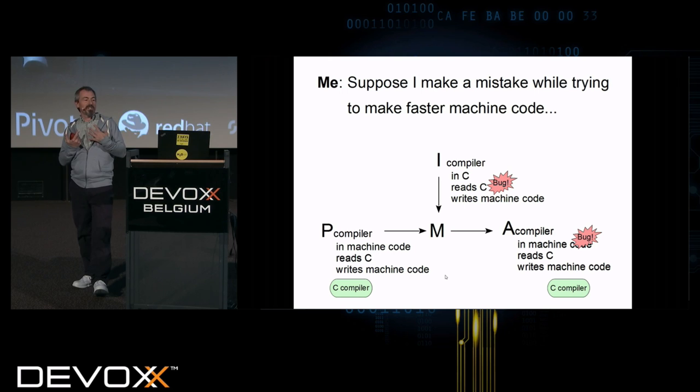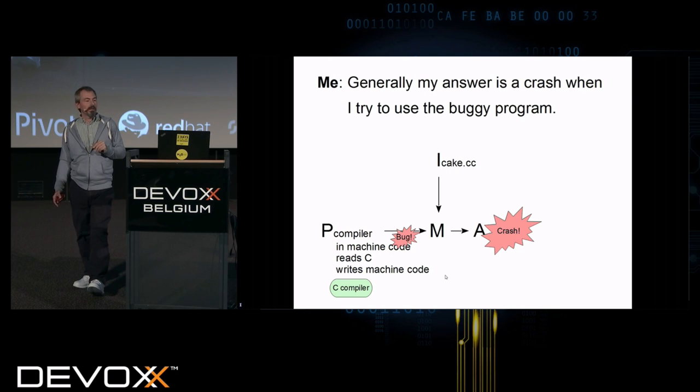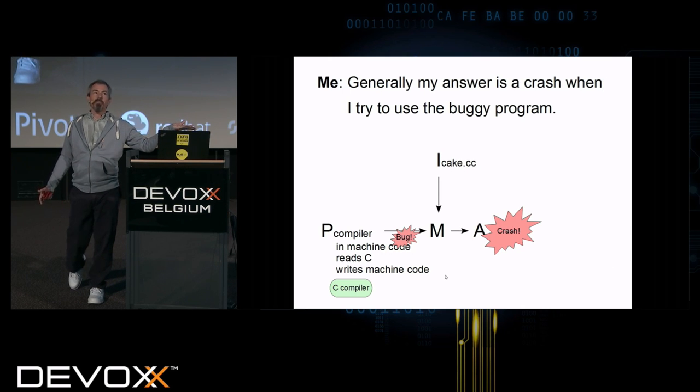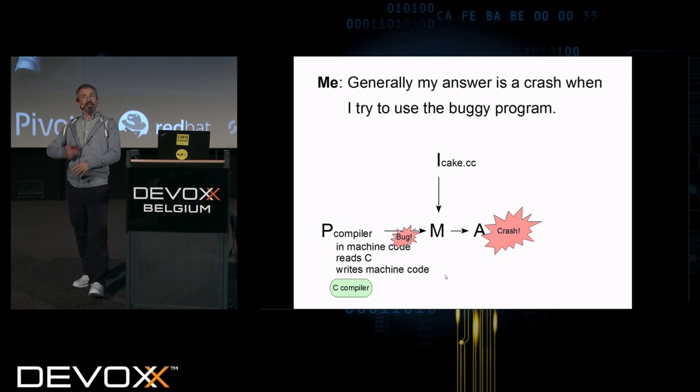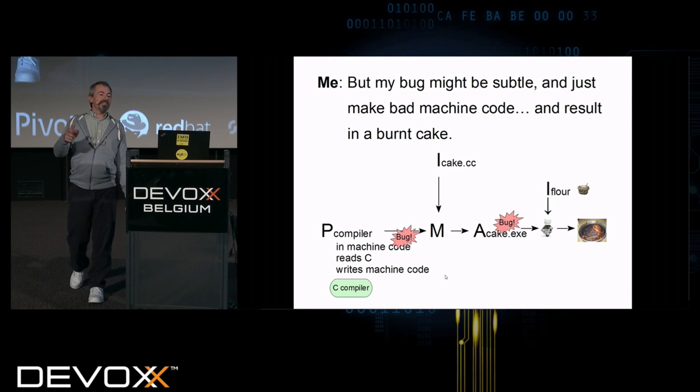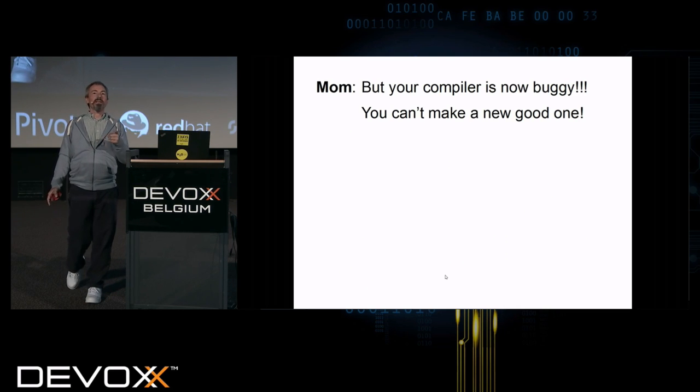Suppose I make a mistake while I'm trying to make faster machine code. So I have a C compiler on my left here, which is in machine code. It's going to read C and write machine code. I have the same compiler in source code in C. And I'm going to write out machine code. I want to write out better machine code, faster machine code. But I make a bug. So I then compile my compiler and out comes a new compiler, which is like the old one, but it has a bug in it. I take the buggy compiler and run it on my cake.cc program. Instead of getting out a pile of machine code, it probably just crashes. But it could be that my bug is subtle and I just make bad machine code out. When I run the cake.exe on the flour, the instructions are bad and the robot burns the cake.